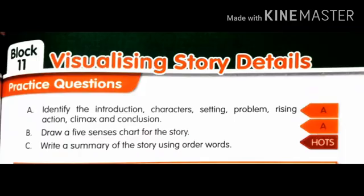After reading, you want to identify the introduction of the story, what are the characters, setting, problem, and rising action — what action was taken for that problem — as well as the climax and conclusion of the story. Also draw a five senses chart for the story: what did Pumpkin see, hear, smell, taste, and how did it feel? Basing on that, you can write with Pumpkin in the centre and the five things it experienced. Finally, write a summary of the story using order words.